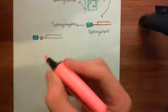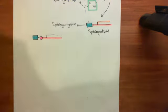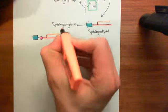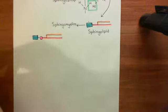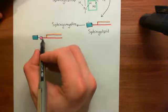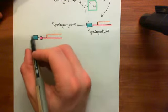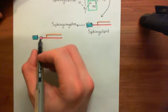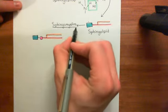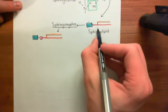You'd have a sphingosine molecule in red, a long-chain carboxylic acid on the amino group of the second carbon, then off the first carbon a phosphate group, and potentially another group such as choline. When you have that structure, you have a sphingomyelin, and you're therefore an example of a sphingolipid.